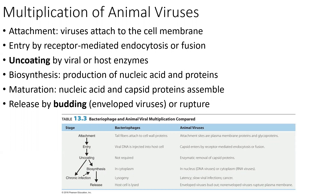The next step is entry or penetration. There are actually three different ways that an animal virus can gain entry into the host cell, and that's going to be dependent on the structure of the virus. Naked viruses — remember, those are viruses without an envelope — have two different approaches to entering the cell. For naked viruses, they're essentially either going to have the capsid absorb to the cell surface, in which case only the viral nucleic acid actually enters the host, and the capsid remains outside of the host cell.